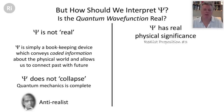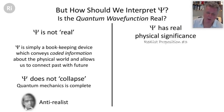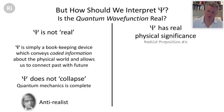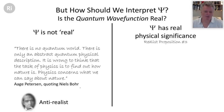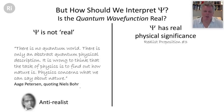To be absolutely clear: Bohr did not deny objective reality or the reality of electrons. He won a Nobel Prize for his model of the atom. Bohr was anti-realist specifically with regard to the significance of the quantum wave function. He is quoted as saying: 'There is no quantum world, there is only an abstract quantum physical description. It is wrong to think that the task of physics is to find out how nature is — physics concerns what we can say about nature.'